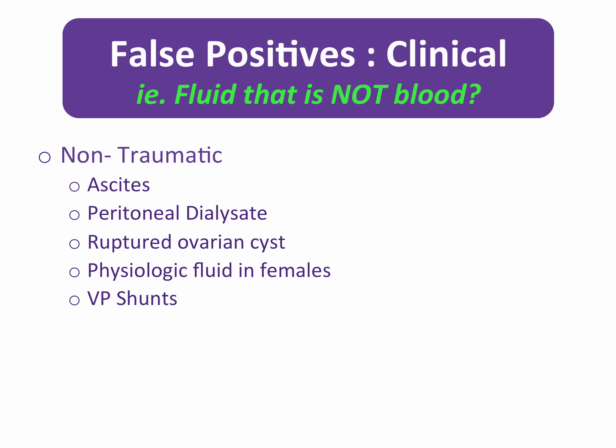Several clinical confounders can lead to a false positive FAST study. The exact nature of free fluid cannot be determined with our ultrasound exam. As such, all of these non-traumatic sources of fluid — ascites, peritoneal dialysate, ruptured ovarian cyst, physiologic fluid in females, and CSF fluid in those with VP shunts — are all indistinguishable from blood. There may be information on history, patient presentation, or previous imaging that will identify these patients, but in the setting of trauma, the pre-existing presence of an intra-abdominal source of fluid does not rule out a coexisting hemoperitoneum. Unfortunately, there is no way to rule this out by ultrasound.